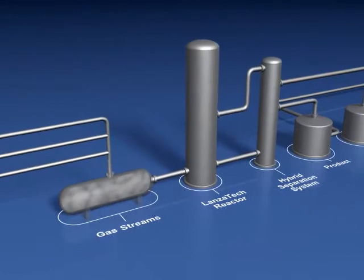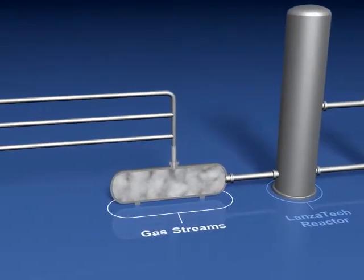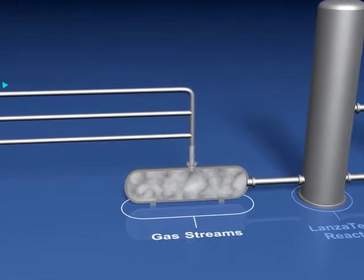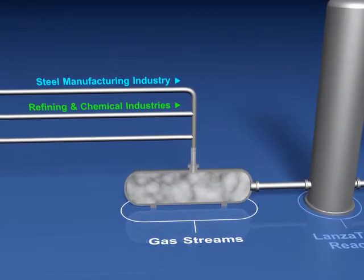The LanzaTech process converts carbon monoxide-containing gases into valuable fuel and chemical products. These gases are typically produced by the steel manufacturing, oil refining, and chemical production industries.